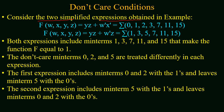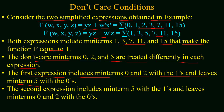Consider the two simplified expressions obtained from the last example. Both expressions are in their simplified form, and if you analyze them, both include the min terms 1, 3, 7, 11, and 15 that make the function equal to 1. The don't care min terms 0, 2, and 5 are treated differently in each expression: the first expression includes min terms 0 and 2 with the ones and leaves min term 5 with zeros, whereas the second expression includes min term 5 with the ones and leaves don't care min terms 0 and 2 with zeros.